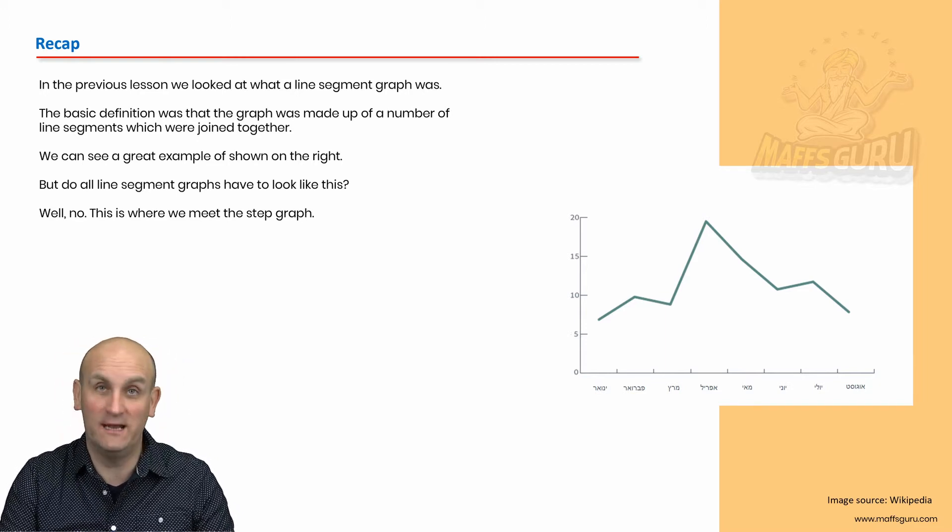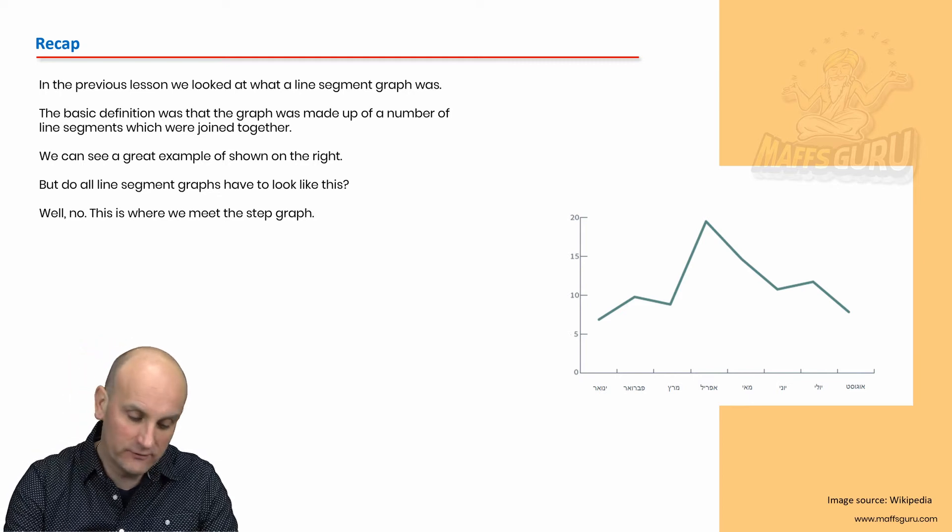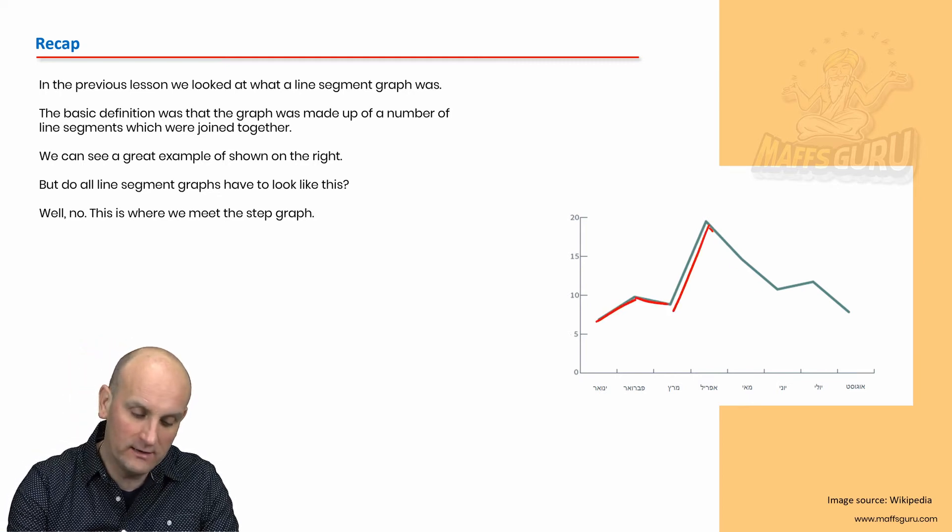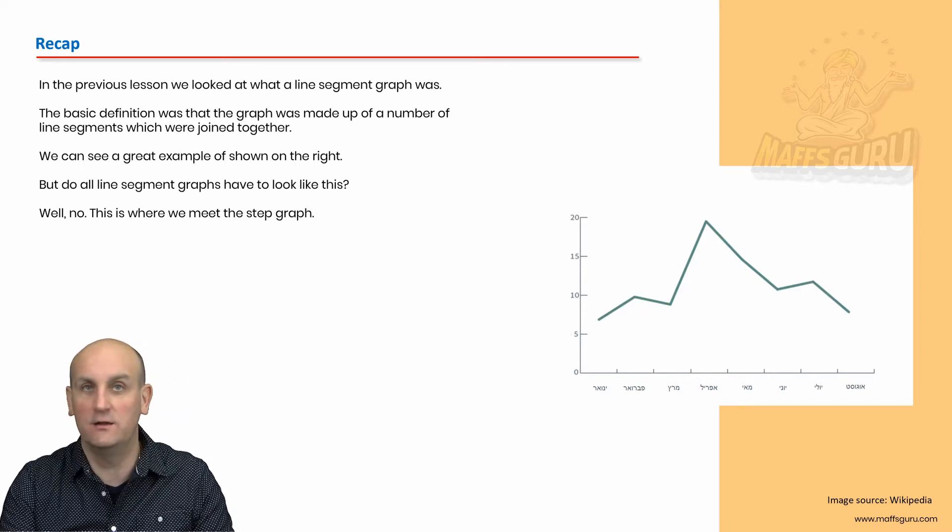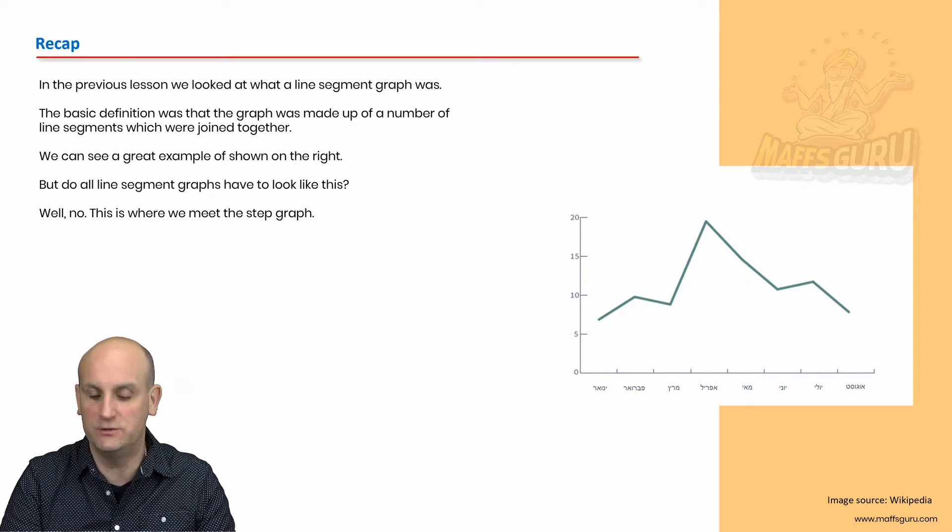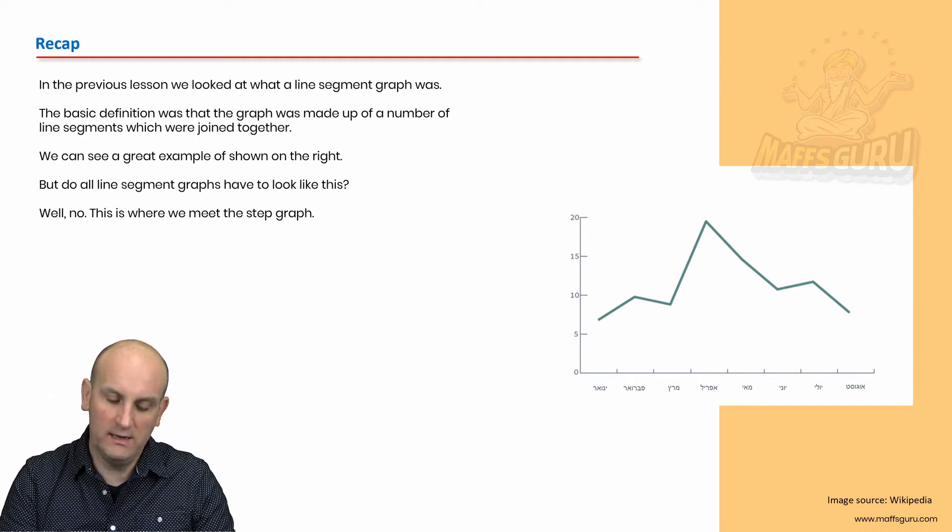Why? Because it's a graph made up of line segments. You've got a straight line here and a straight line and a straight line, and they're all joined together in beautiful ways so that we can see some beautiful pattern and life is good. Do all graphs look like that? No, not really.